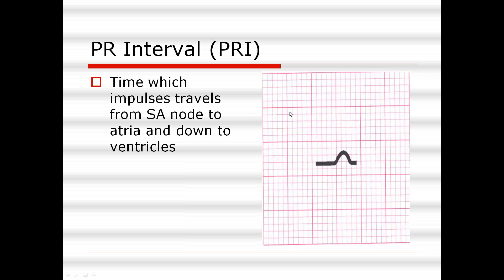The PR interval represents the time from when the SA node fires and travels down through the AV node and bundle of His to reach the ventricles. After the P wave, notice we come down to the isoelectric line — there is a very short isoelectric area before the next contraction begins. These events happen in milliseconds.